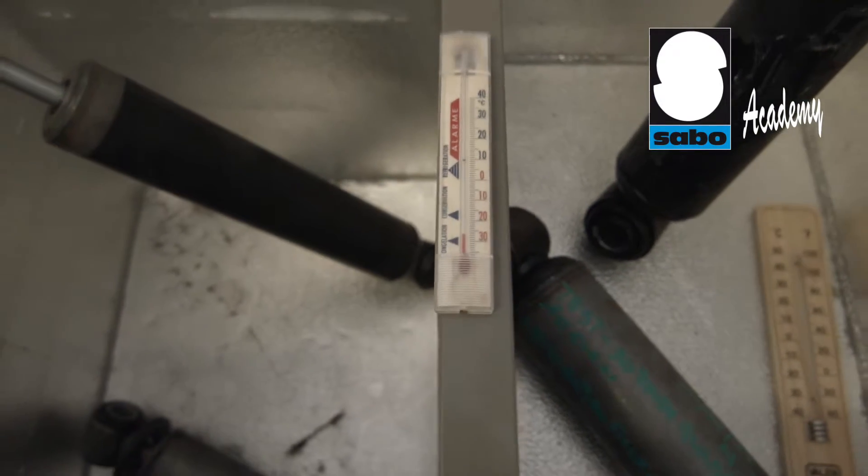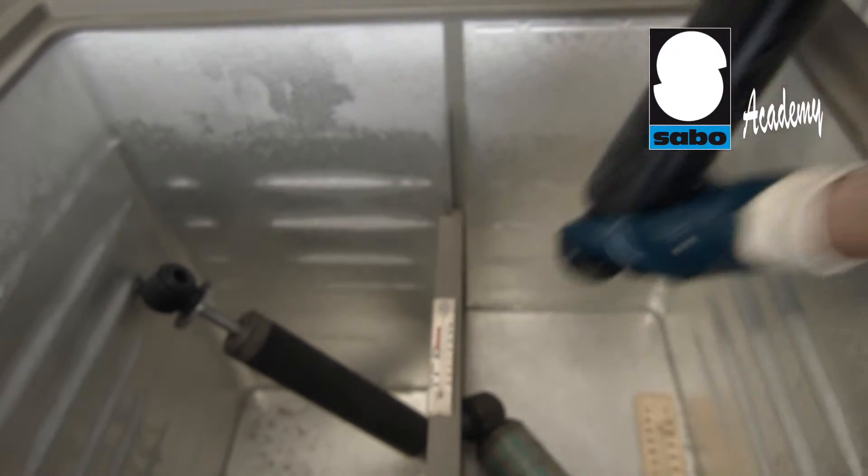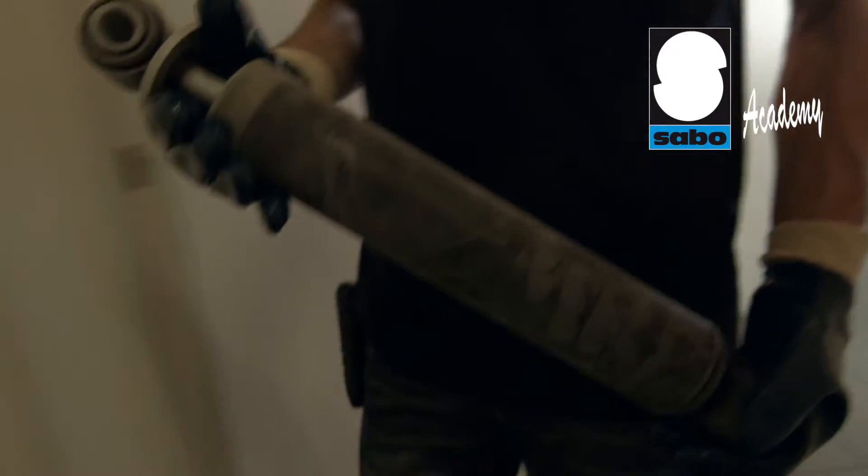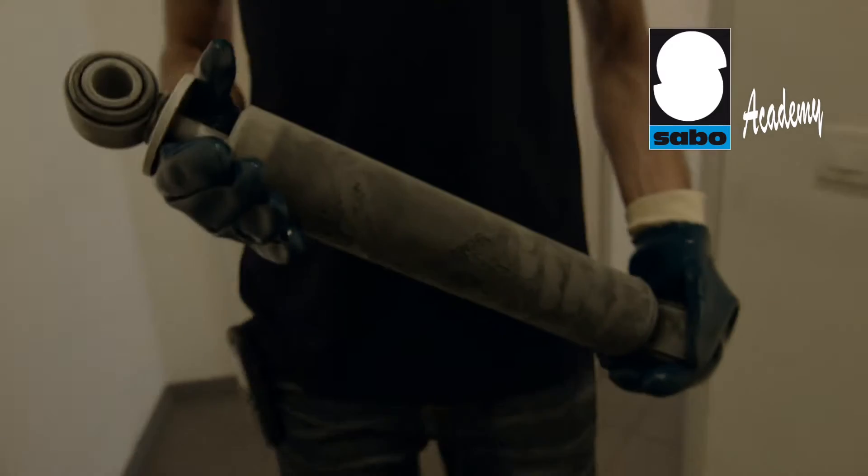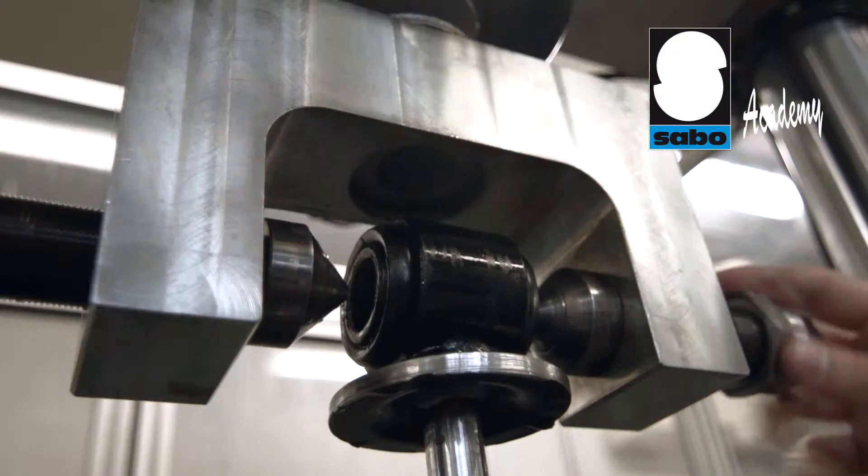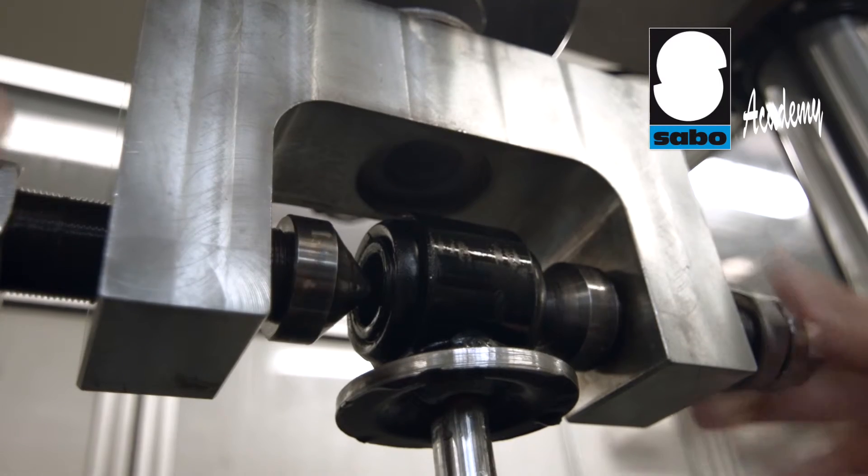In the first stage, the shock absorber built using the components to be validated is placed in a temperature testing chamber and cooled to minus 30 degrees Celsius and left to stabilize for 24 hours so that all its component parts have cooled.